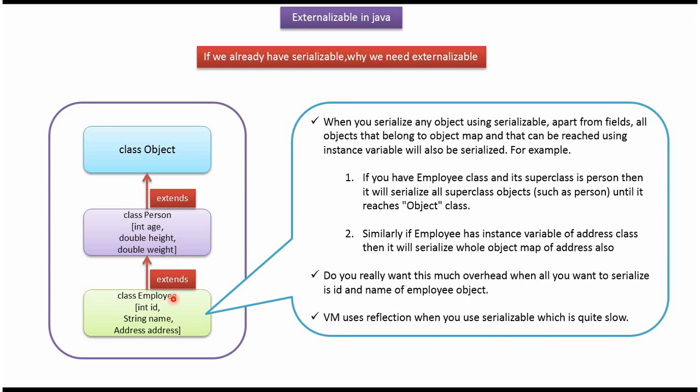To avoid this, we can use externalization. If we use externalization, we can do custom serialization — so we can save only the Employee object, and along with that, only the id and name fields. Other information we don't need to save. So basically, using externalization, we can do custom serialization. That is why we need the Externalizable interface. Thanks for watching.